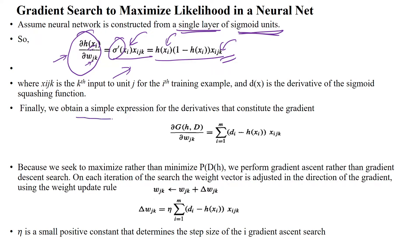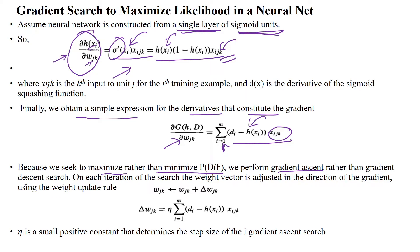Finally, we obtain a simple expression for the derivatives that constitute the gradient. We get the summation from 1 to m — for all m number of samples — we find the difference between predicted output and actual output. This is maximizing the quantity rather than minimizing the probability of g given h, so we perform gradient descent search.